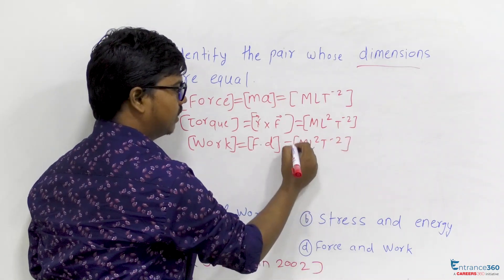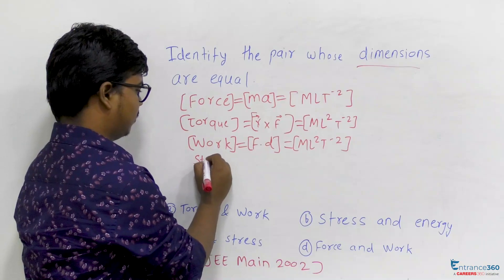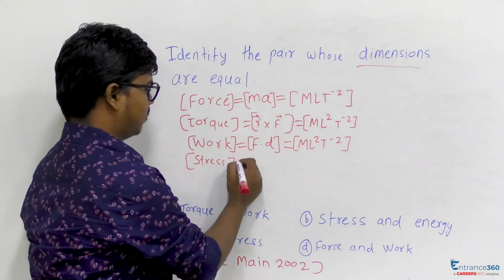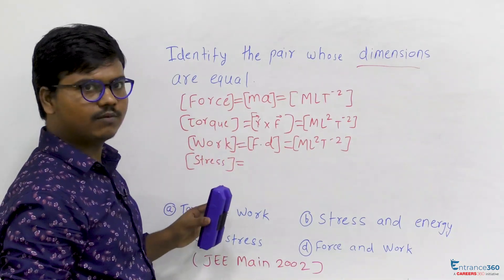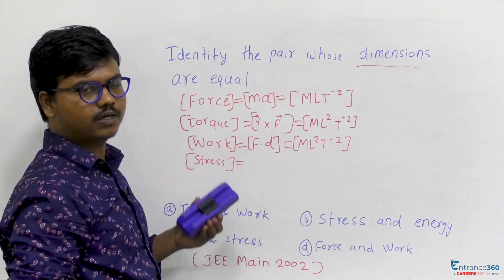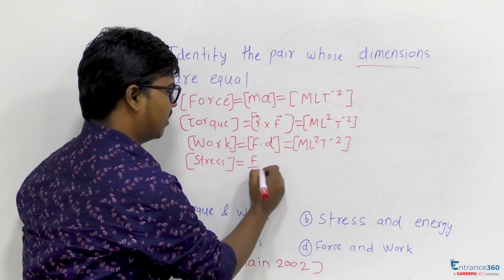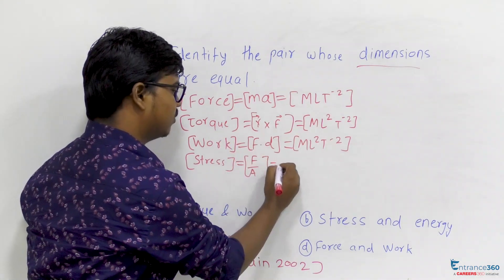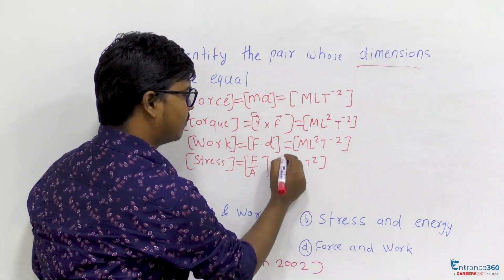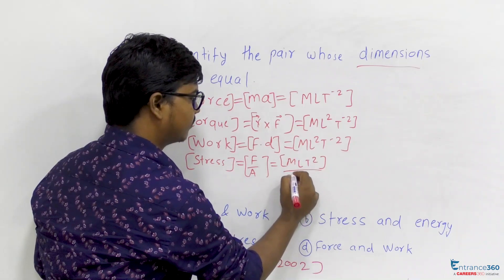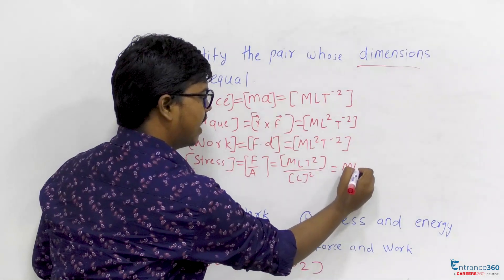Stress is defined as force per unit area, that is force upon area. So the dimension of stress is M L T minus 2 divided by L squared, which equals M L minus 1 T minus 2.